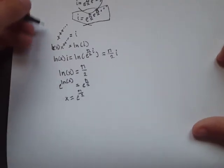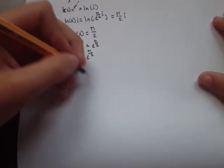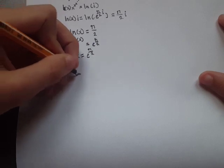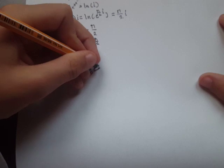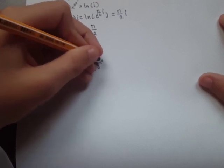Then we substitute back here, giving us i equals e to the π over 2 to the e to the π over 2 indefinitely.